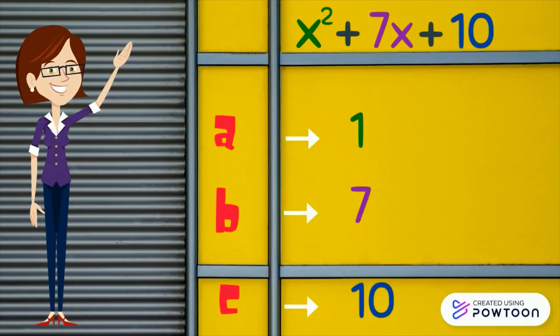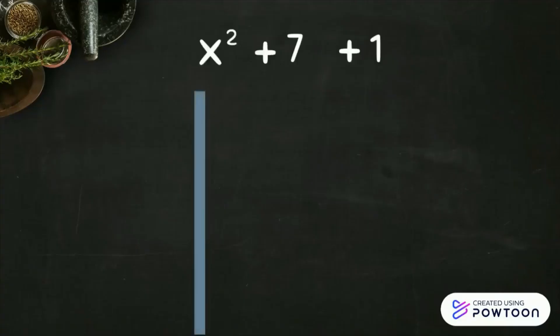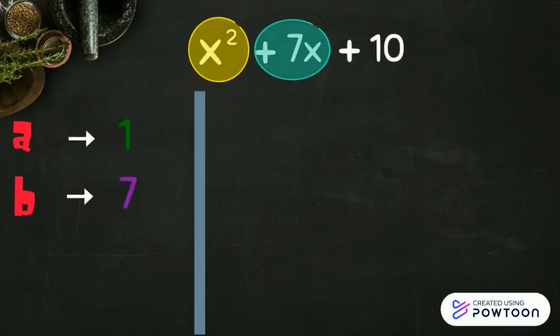Can you follow? Our a is 1, b is 7, and c is 10. In factoring this type of trinomial, consider the following steps.